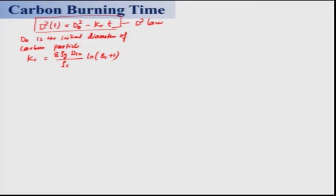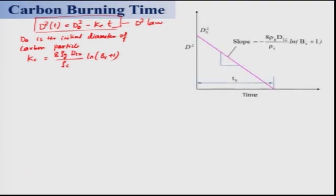kc is a constant. We derived that kc = 8·ρg·D₁₂ / (ρc · ln(Bc + 1)), where ρg is the density of the gas, ρc is the density of carbon, D₁₂ is the diffusivity between carbon and oxygen, and Bc is your mass transfer number — sometimes called the Spalding number.